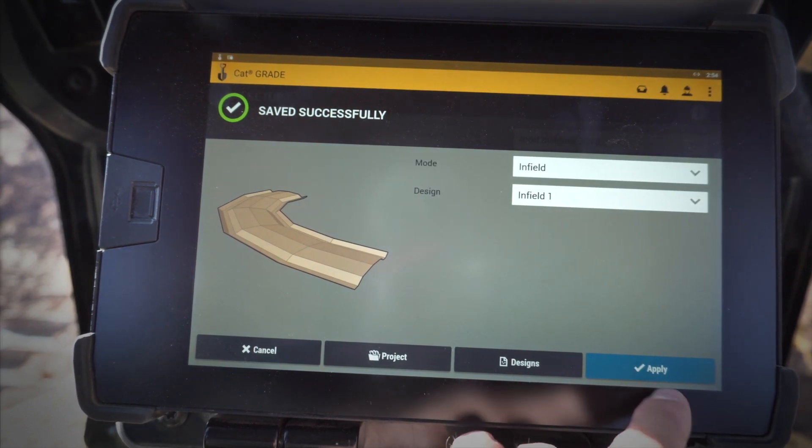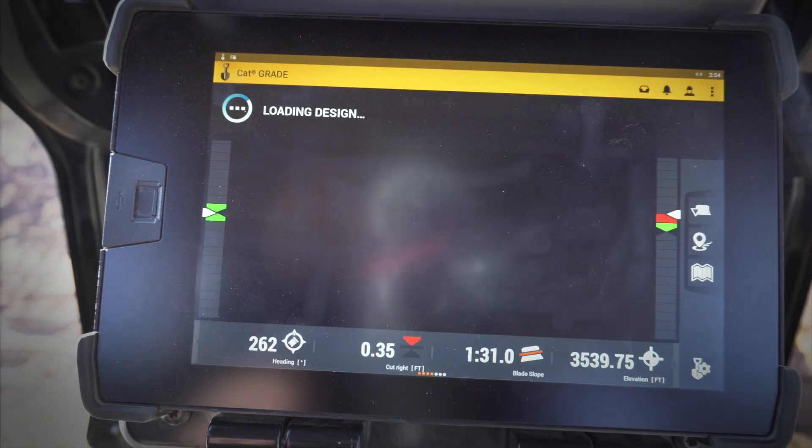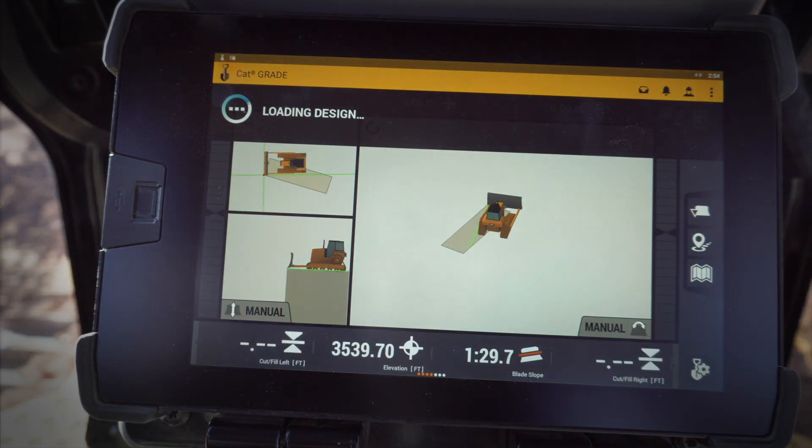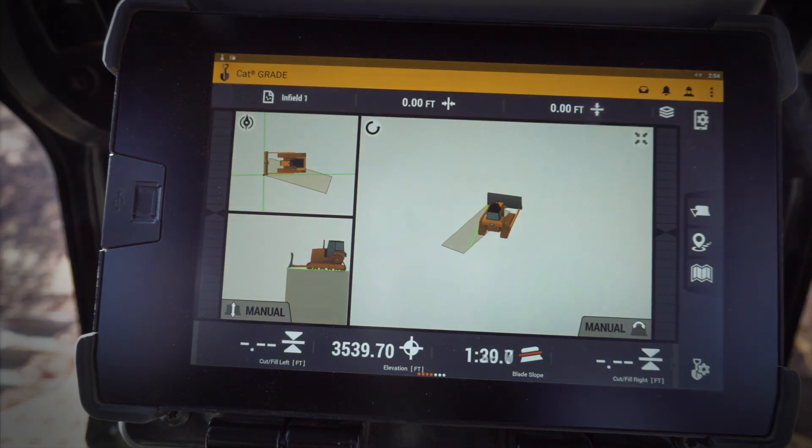Now I'm going to select that design. So now I've got a simple infield design that I've created with two points using my blade tips. Really slick, really easy.